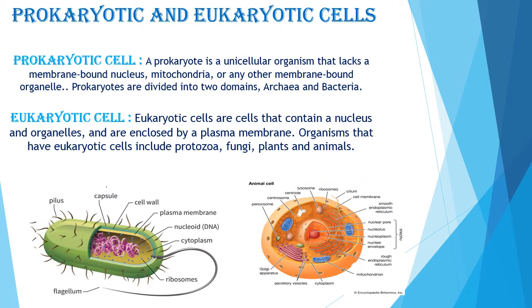Now let's discuss prokaryotic and eukaryotic cells. A prokaryote is a unicellular organism that lacks a membrane-bound nucleus, mitochondria, or any other membrane-bound organelle. Prokaryotes are divided into two domains: archaebacteria and bacteria. The characteristics of prokaryotic cells are that they don't have any nucleus — the nuclear material, that is DNA, lies naked in the center of the cell and remains in direct contact with the cytoplasm. The prokaryotic chromosome is formed of a single circular DNA molecule. In prokaryotes, DNA is not associated with basic proteins called histones.